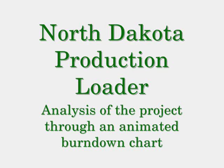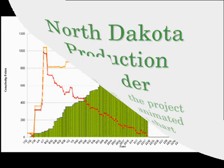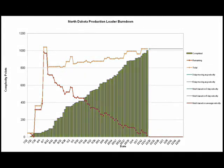This movie shows an animated burndown chart showing the progress made on the North Dakota production loader project. I'll start by showing the end. The chart shows several pieces of data. Time goes along the bottom, with the project starting on July 22nd and ending on November 17th. At the time this movie was made, the project was essentially complete. Final testing is being done and deployment to the production environment is scheduled for November 20th.